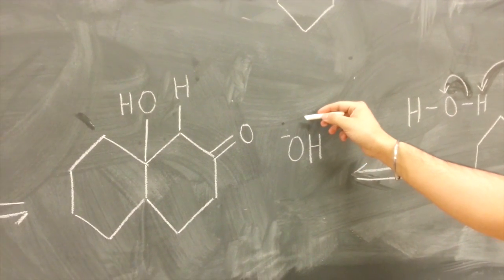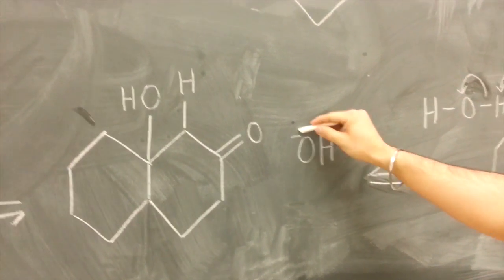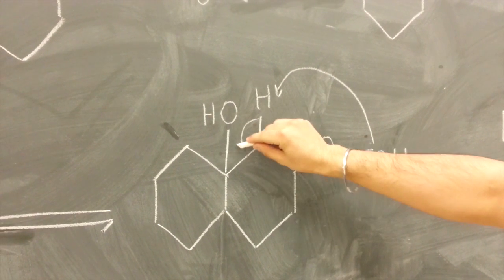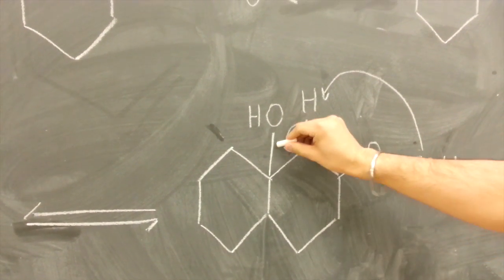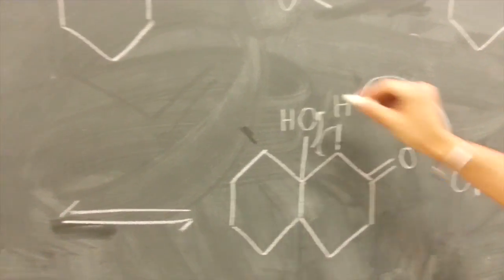There's just a few more steps people. That ain't all. Base now removes the alpha proton. Favoring of an E2 elimination. OH leaves and we get an enone. That's the final product of an annulation.